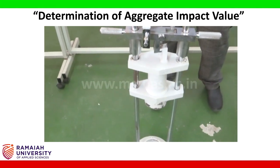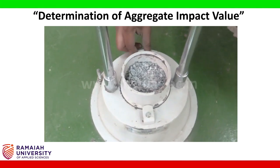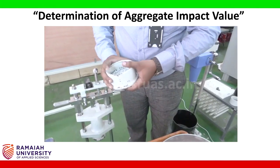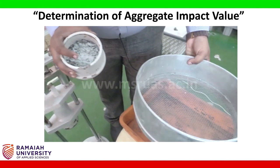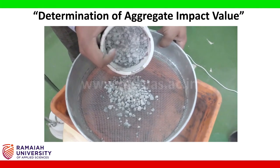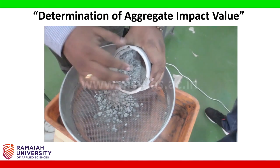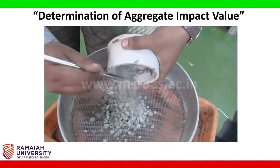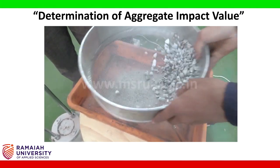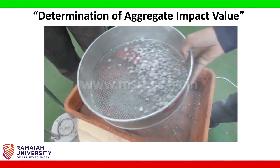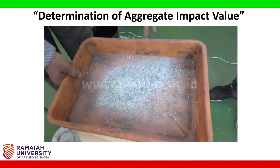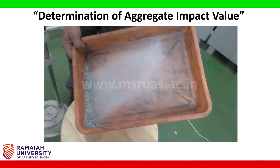After locking, take out the impacted sample from the aggregate impact testing machine. I am going to use a 2.36 mm standard IS sieve and place the impacted aggregate onto it. Use the tamping rod to make sure all particles from the testing cylinder are removed. We are going to sieve the sample and note the weight of aggregate passing through 2.36 mm.